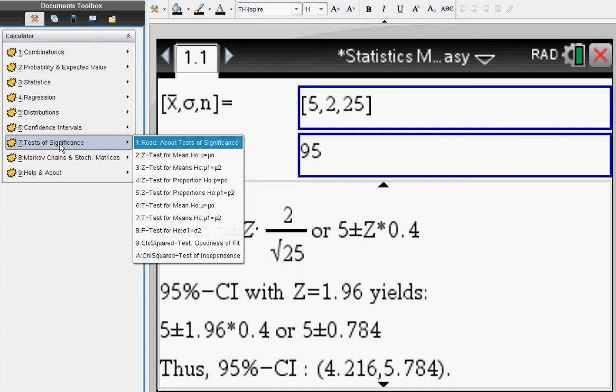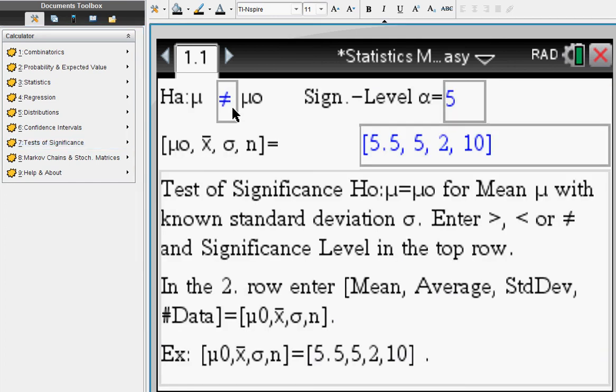Okay, lastly, test of significance. Let's do a z-test for a mean. Our alternative hypothesis is not equal.